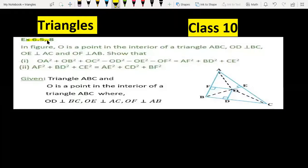Exercise 6.5.8 question figure. In front of the triangle ABC, O is the point interior to the triangle, this is O point. OD, OE, and OF perpendicular.